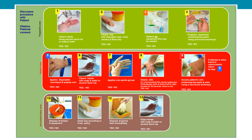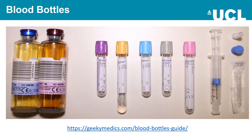Looking at the blood bottles: these include blood culture bottles, an EDTA tube, an SST tube, a coagulation tube, a glucose tube, and a pink tube, and on the right a blood gas. There is an explanation of all the different blood bottles at geekymedics.com/blood-bottles-guide.